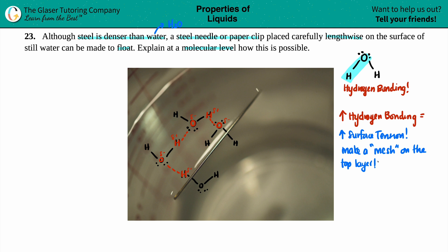So, increase surface tension, increase hydrogen bonding. That's the intermolecular force, which I'll just put as IMFs, intermolecular force, IMF. And you make a mesh on that top layer. So we'll say the steel needle will rest on top of that layer. And that's it.